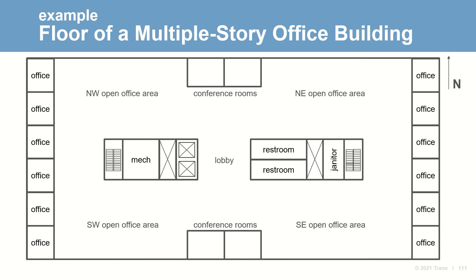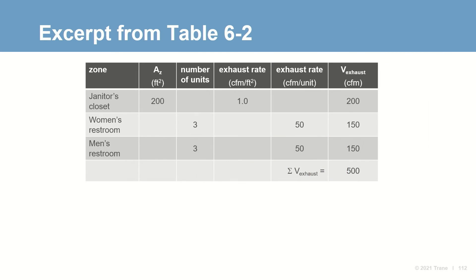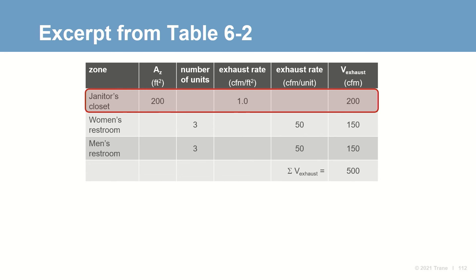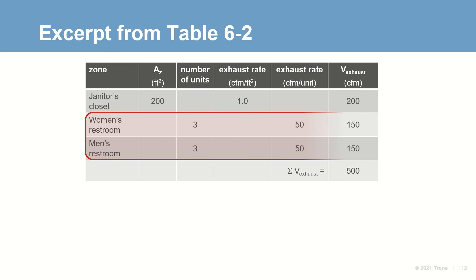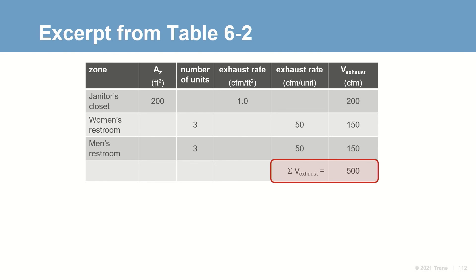Returning to our example office floor, recall that we have a janitor's closet and two restrooms. Based on the 1 CFM per square foot listed in the table, the exhaust air flow from the janitor's closet must be 200 CFM. Based on 50 CFM per unit, 150 CFM must be exhausted from each of the two restrooms. So the exhaust system must be designed for a total of 500 CFM.